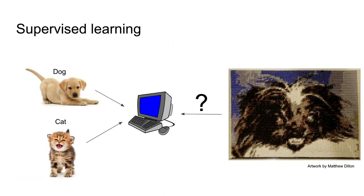These methods get complex because often we can't get a perfect description of all the features from our input. We might get something noisier than hoped — for example, rather than a clear photo, we might get something more pixelated like a cross stitch. Part of classifier performance is determined by how well descriptive features can be pulled from whatever is provided as input. In bioinformatics, in the SNP example, that noise might be error in sequencing data.